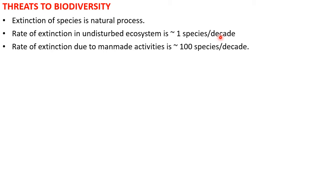The rate of extinction due to human activities is around 100 species per decade. That is a dramatically higher rate compared to the natural extinction rate of approximately one species per decade.